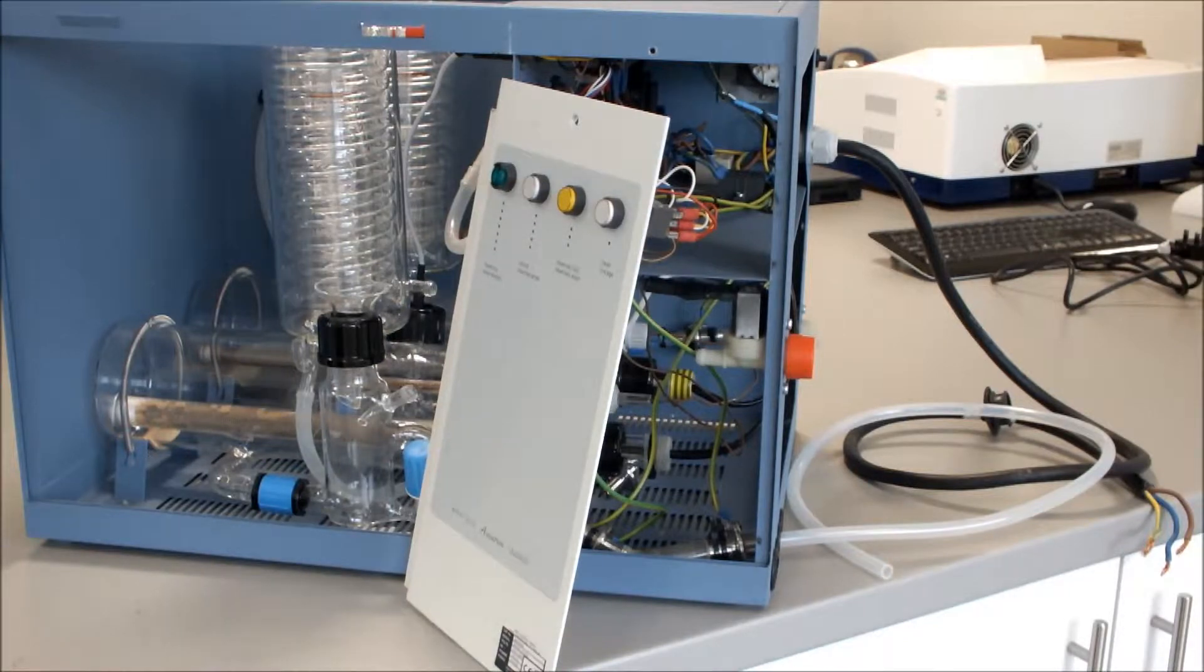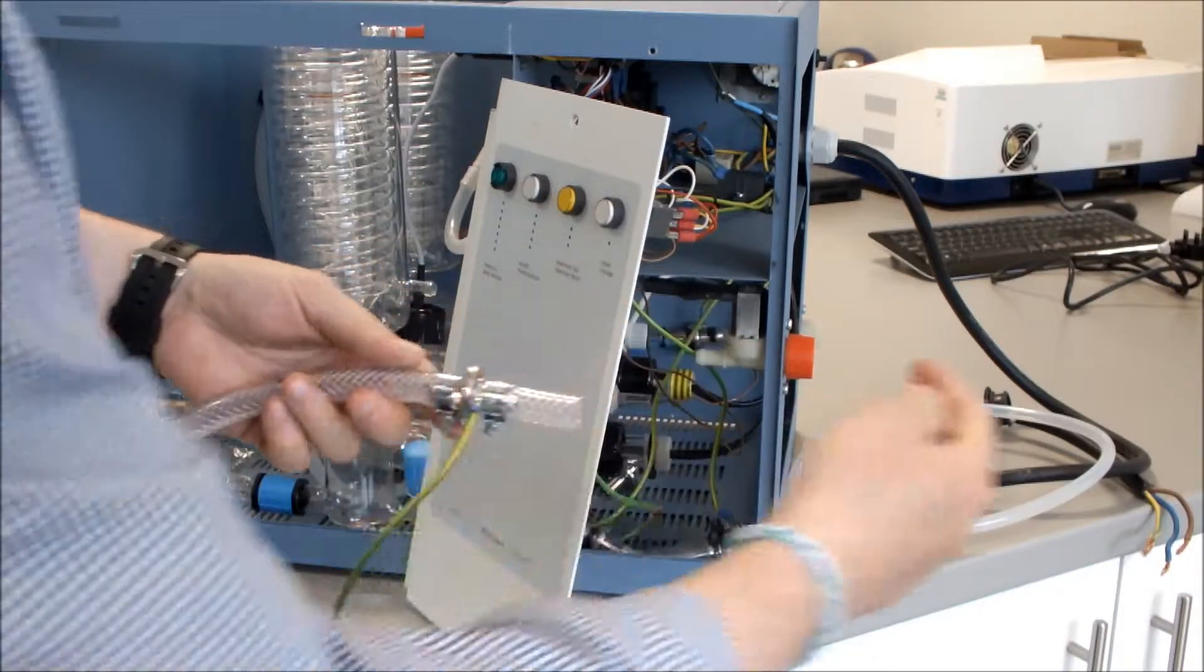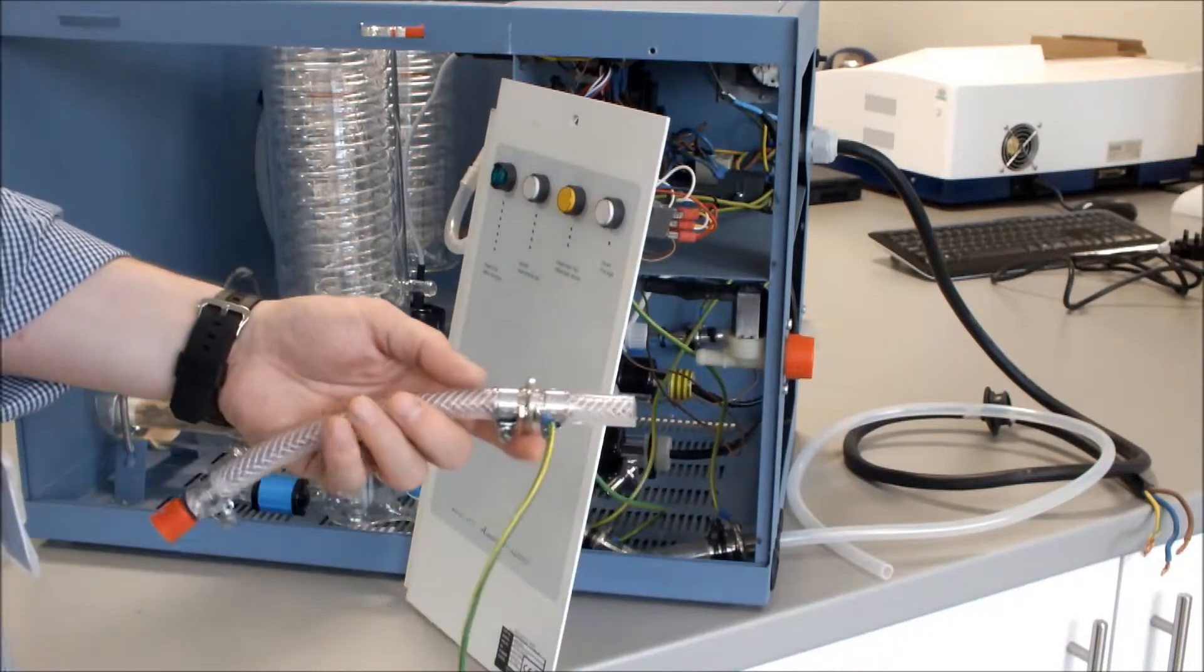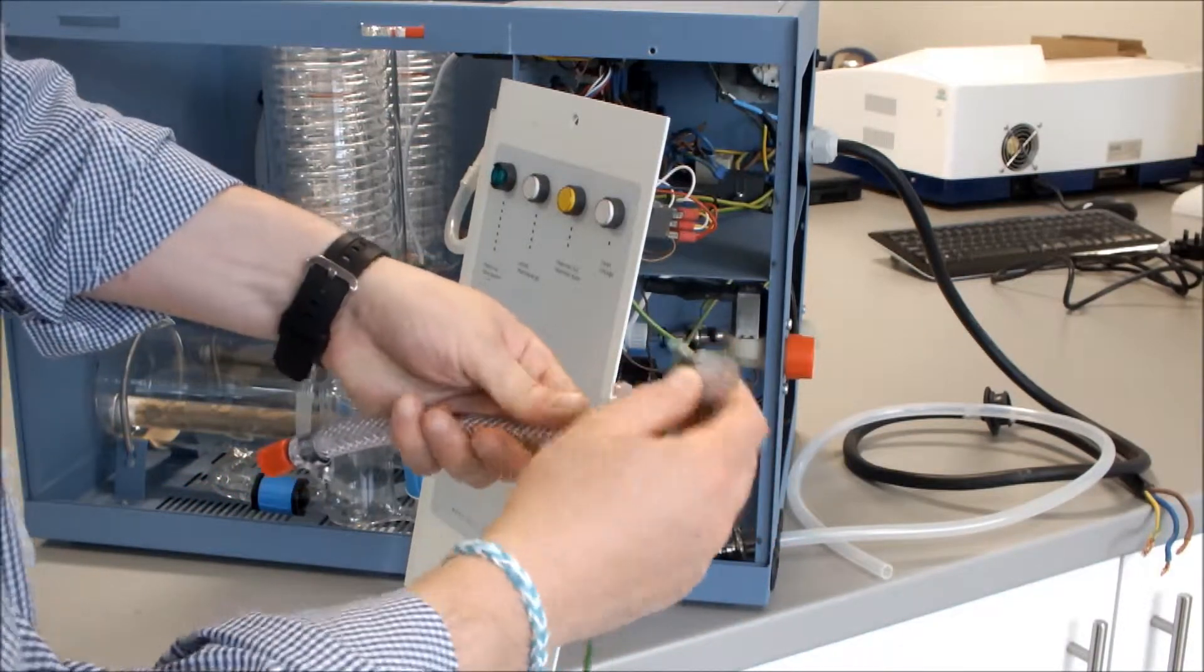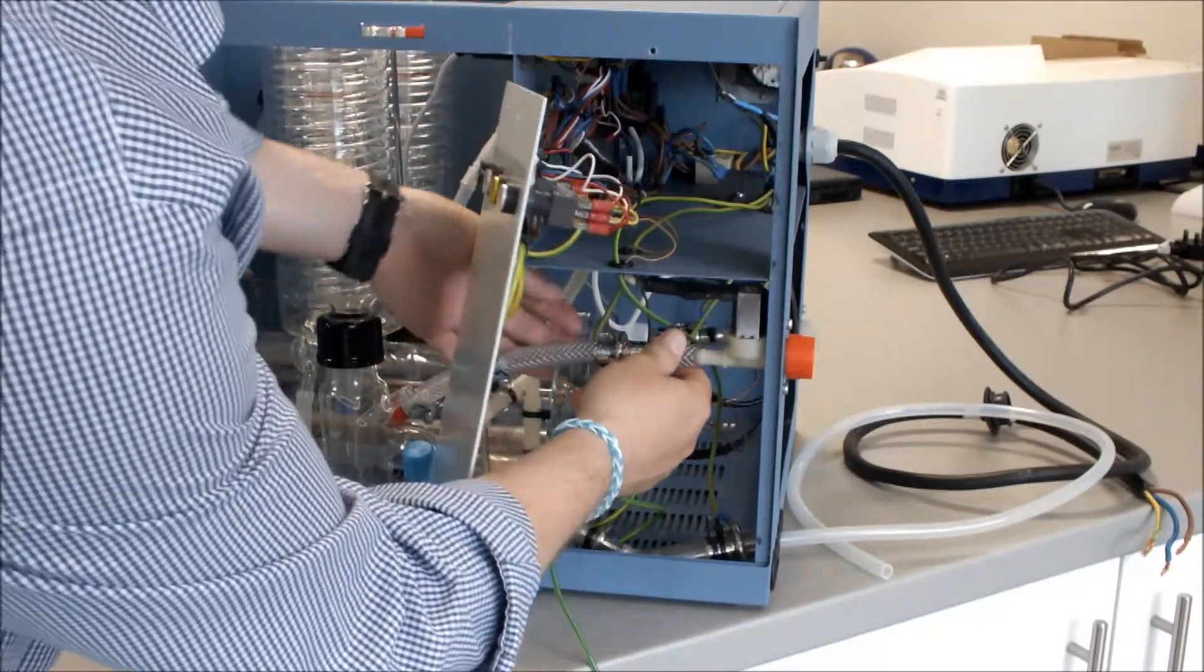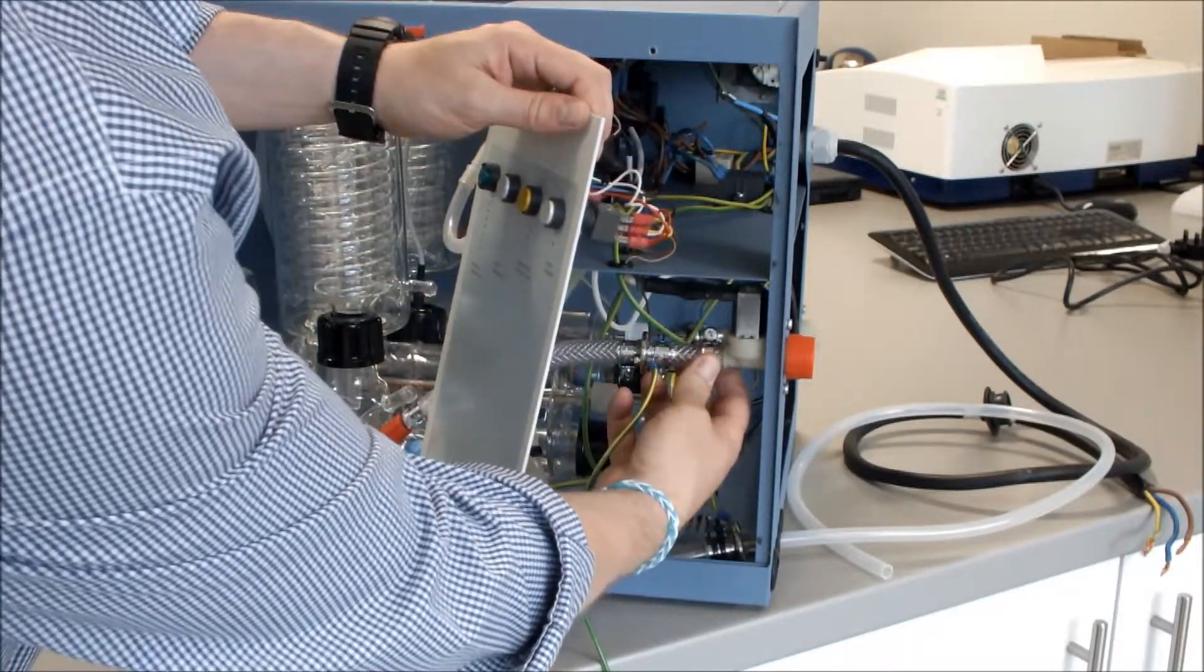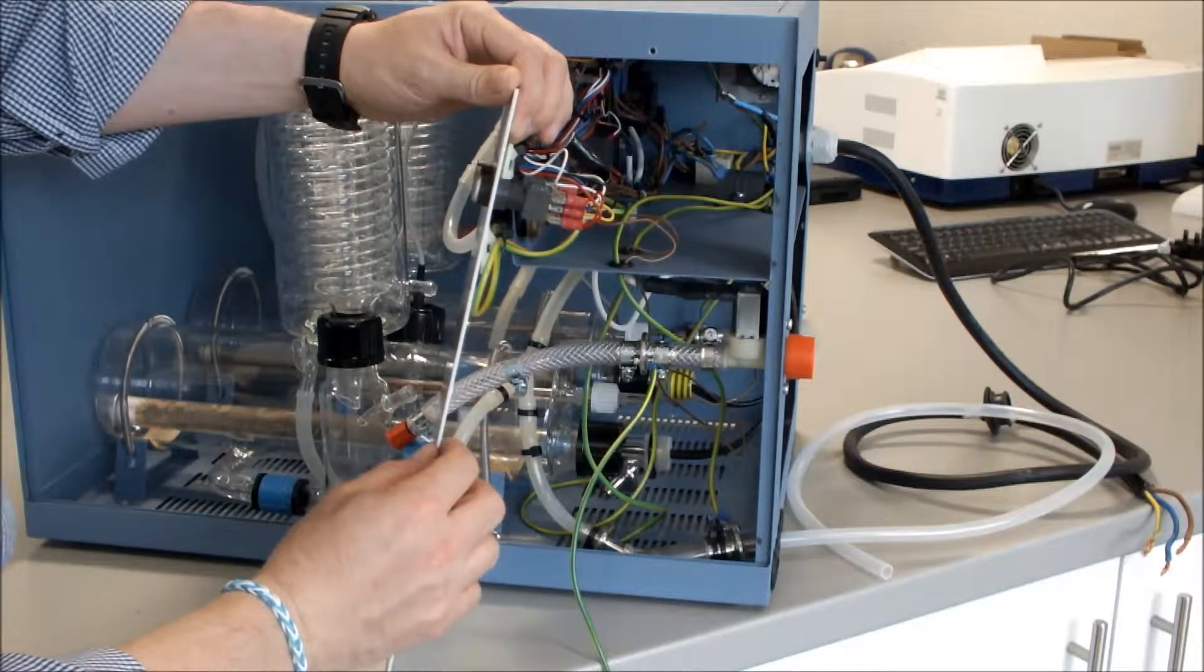The next thing to do is to connect our deioniser pipe assembly to our water inlet solenoid. First, we fit our jubilee clip onto our tubing, then fit the tubing onto the solenoid. We can then tighten up the jubilee clip.